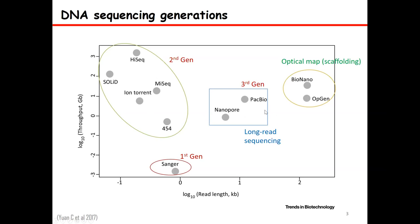Third generation technology includes recent technologies, especially PacBio and Nanopore, which are commercially available now. First generation reads are quite longer in size compared to second generation, but the throughput — the depth of sequencing you get — is really low, which means you have to pay more money to get more sequence. Second generation sequencing, or NGS, next generation sequencing, gives you high throughput potential, but read lengths are really low, like less than 500 base pairs.